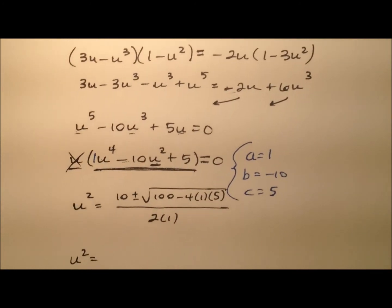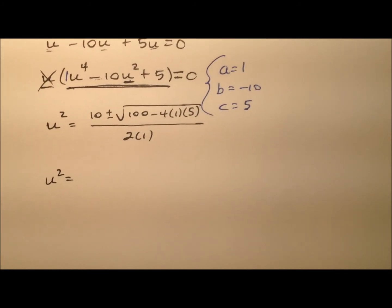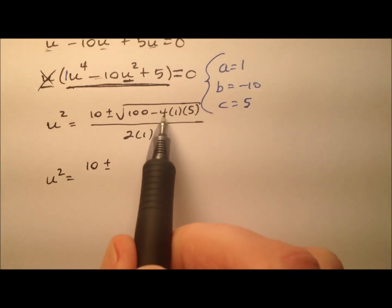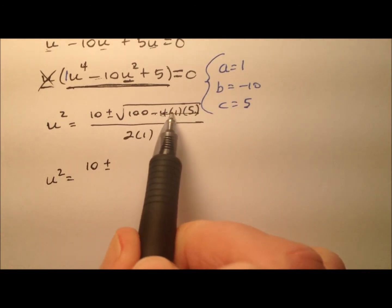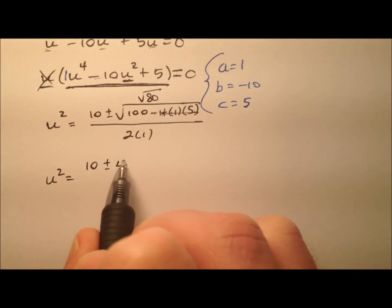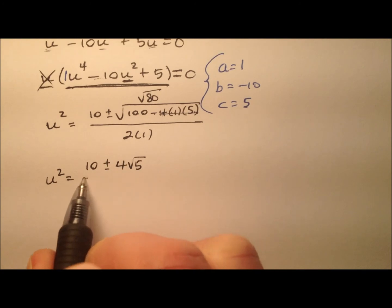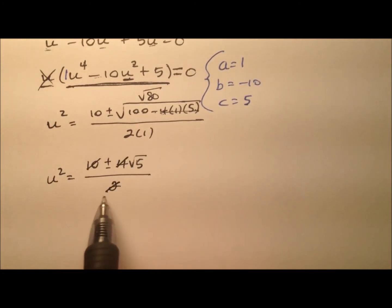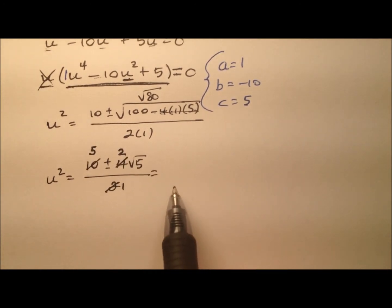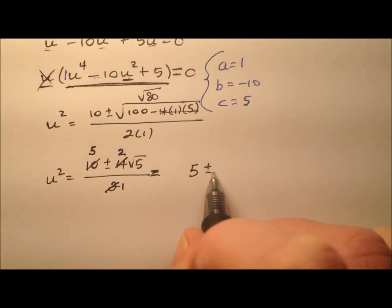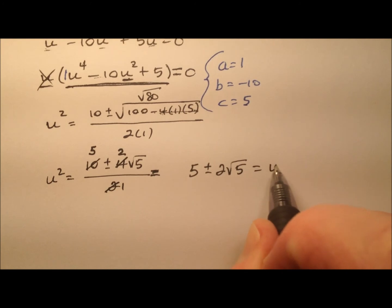Okay, so we'll move this up a little bit so we have some room to work. So it looks like 10 plus or minus. Well, 4 times 5 is 20. So 100 minus 20 will be the square root of 80, which can actually reduce nicely to 4 radical 5 all over 2. And it looks like we can factor and cancel a 2 out of everything. So 5 and 2 and 1. So my u squared ends up being 5 plus or minus 2 radical 5.